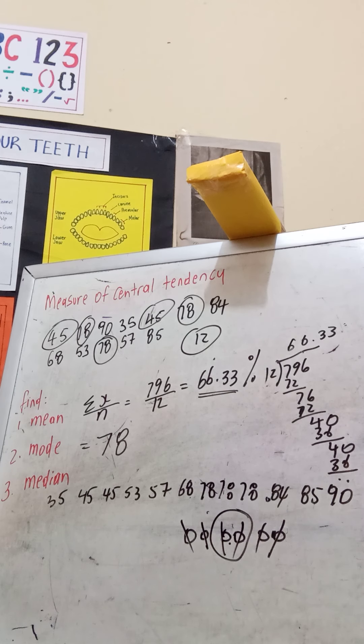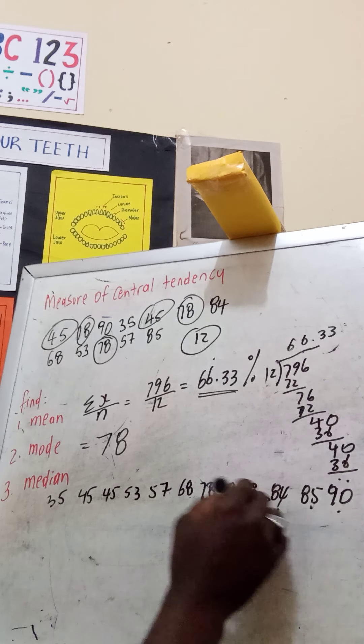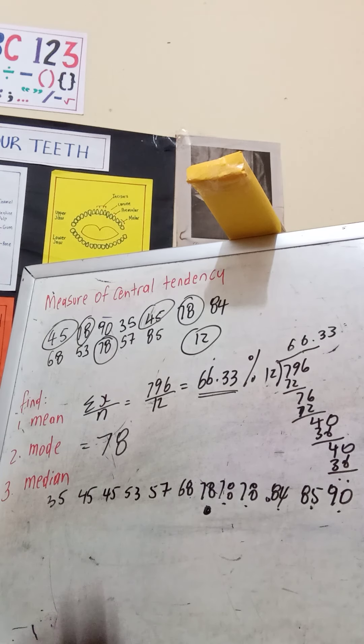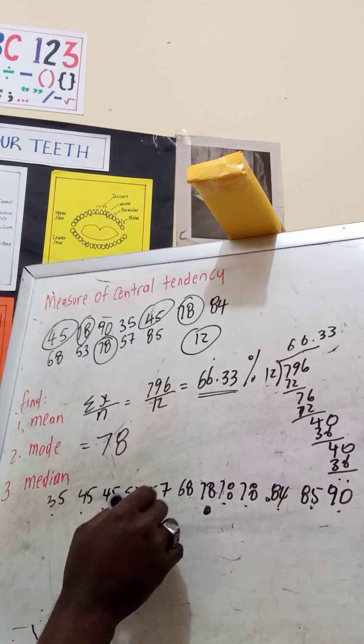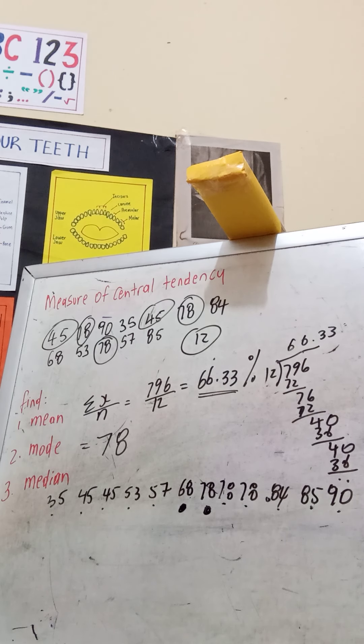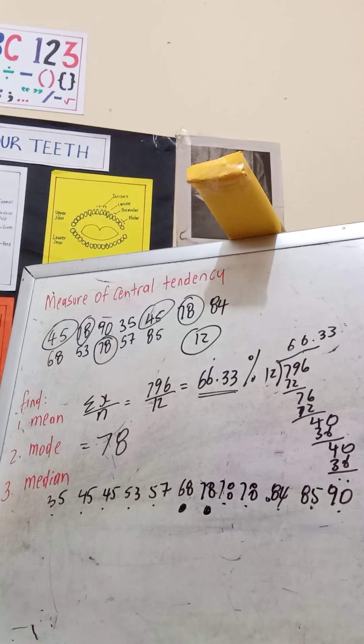What I'd have to do is take the two that are closest to the center, add them together, and divide them by two. Let's count from each side: one, two, three, four, five, six. One, two, three, four, five, six. So here we have six. I realize now that I have two numbers in the center.